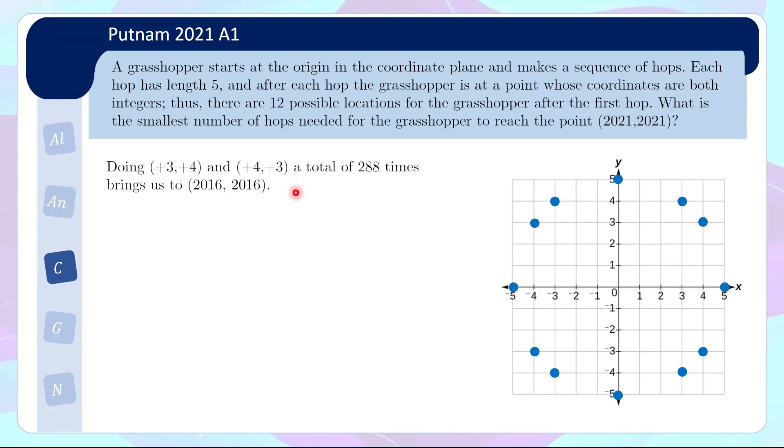So indeed, let's see what happens if we do (3,4) and (4,3), which will give us +7 +7 when we do one pair. Now we maybe want to do that repeatedly. So we realize that if we take 2021 and divide by 7, we get 288 and some remainder. So let's try doing that a total of 288 times, and we'll end up at (2016,2016).